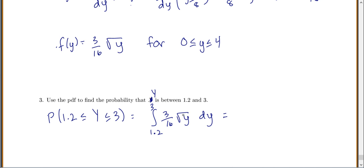To integrate this, it's probably easier to remember that this is y to the power of 1 half. The 3 sixteenths stays there. Now, with your y, you raise the power by 1, so 1 half plus 1 is 3 halves, and you divide by your new power. And we will evaluate this from 1.2 to 3.